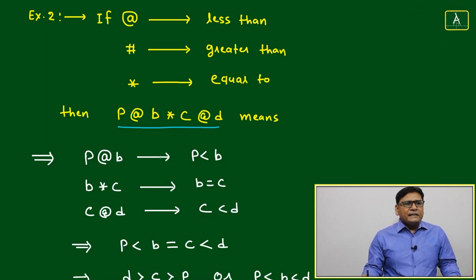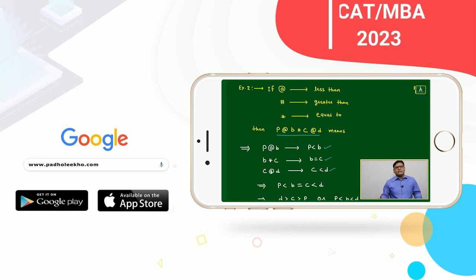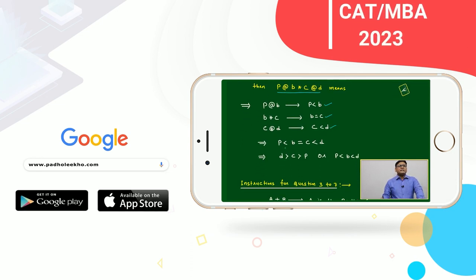P @ B meaning is P is less than B. B * C: B equal to C. C @ D: C less than D. Now commonly we can write P is less than B, B equal to C, and C less than D like this.